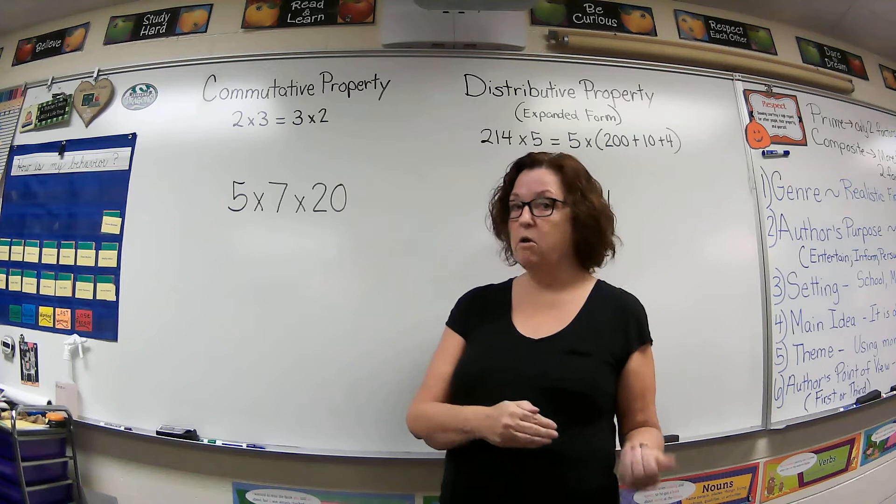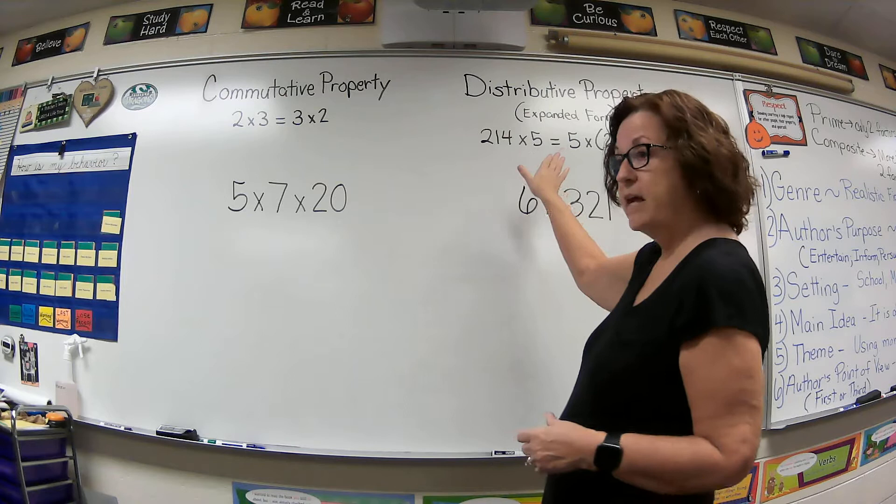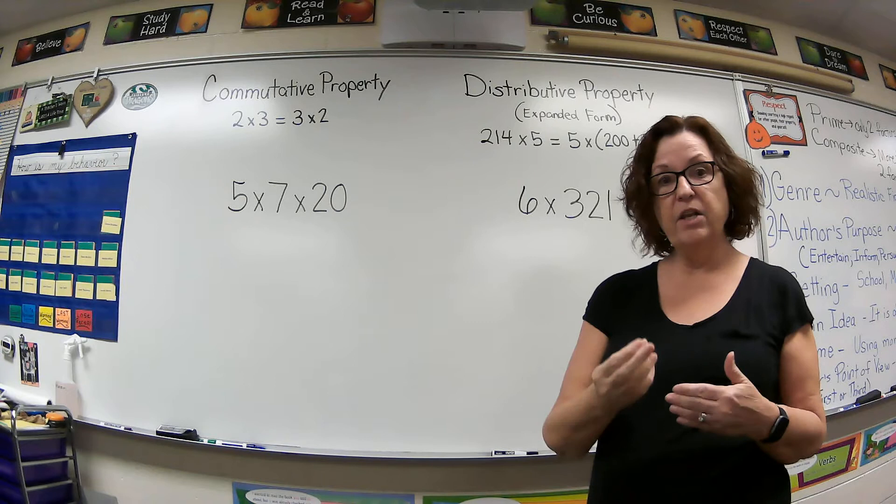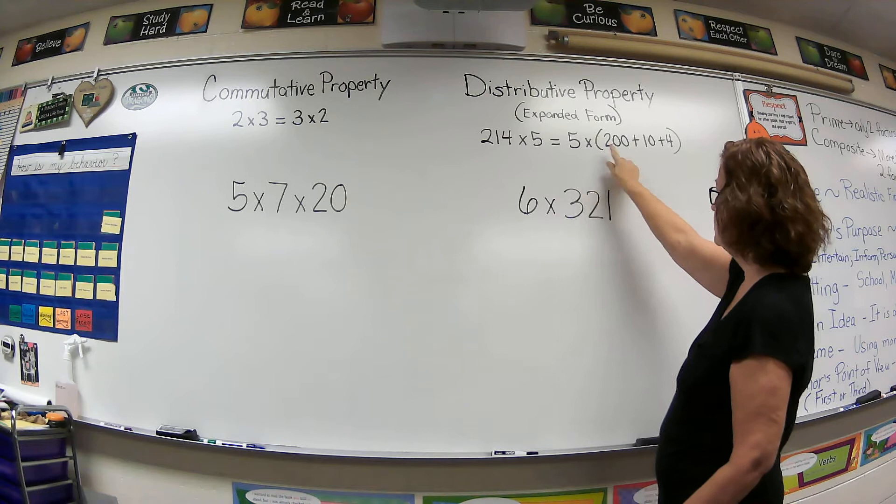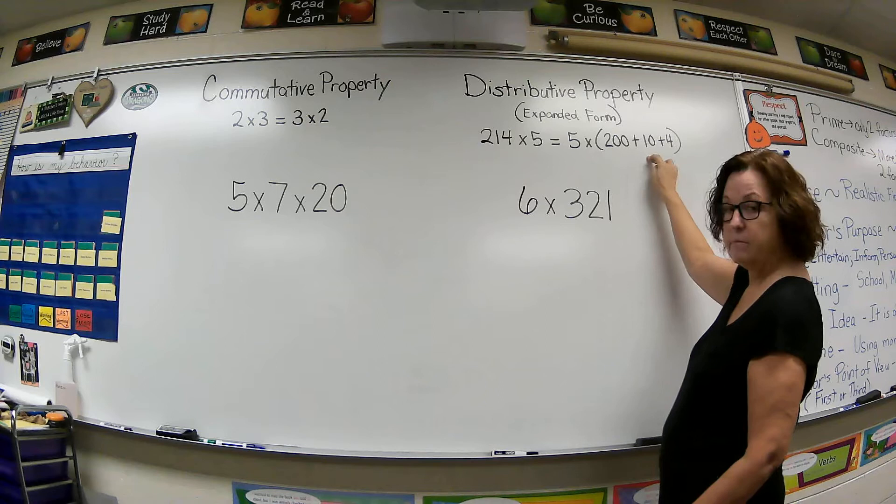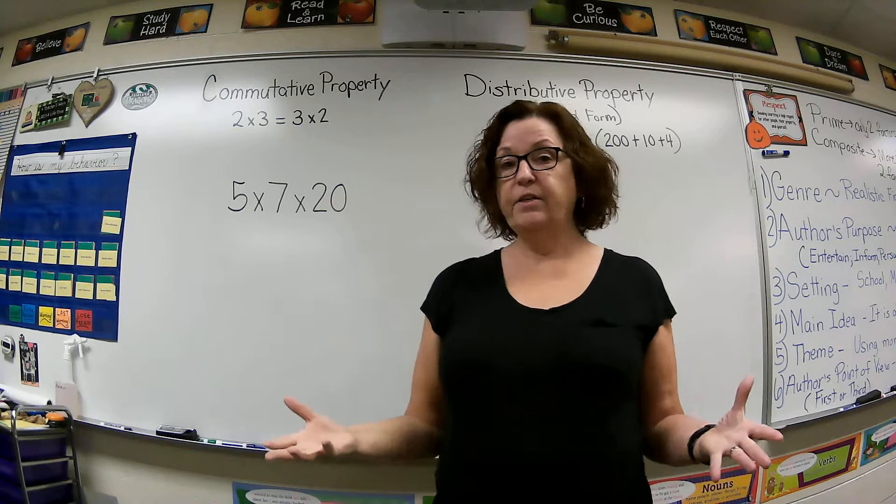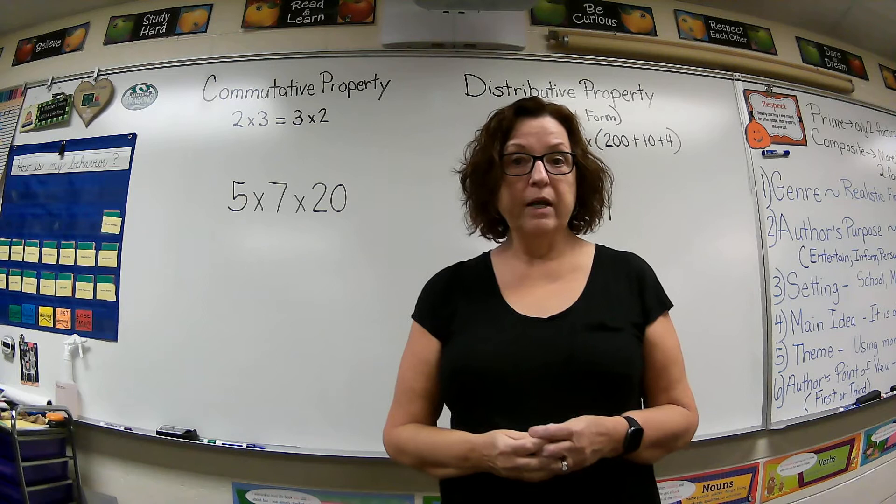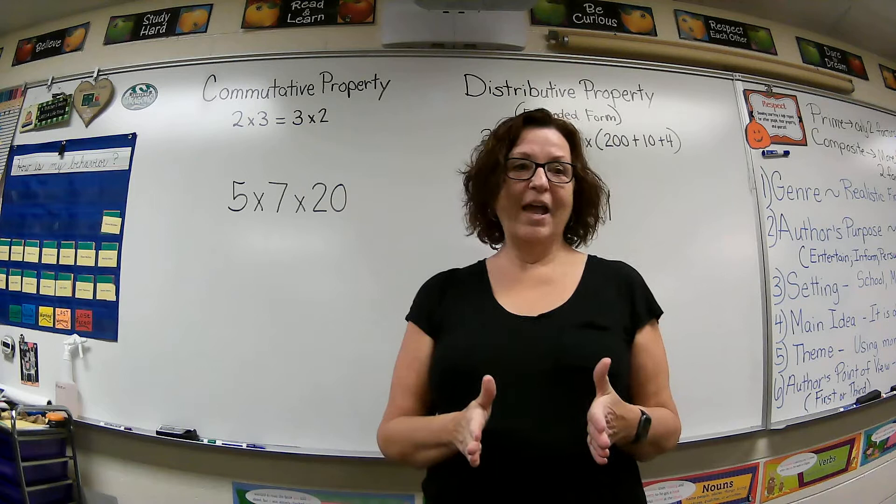We're going to use some of that today and then we're also going to use the distributive property, which we've been working on the last few lessons. It says you can expand your larger number, break it into expanded form, and then multiply the other factor by each of those add-ins. So just like this, 5×200+10+4, so 5×200, 5×10, and 5×4. And if you break that down, it makes it easier to find the answer to a large problem. Now we were doing some of this yesterday with multiplying with partial products. It's really the same thing except it's horizontal instead of vertical.